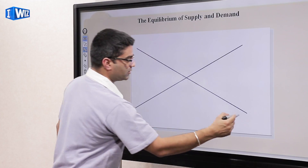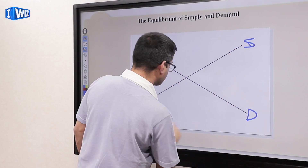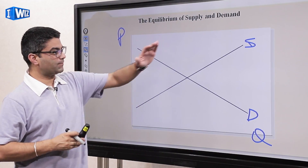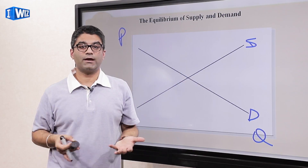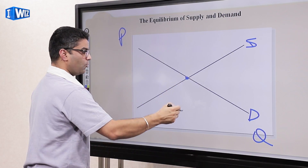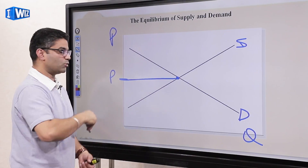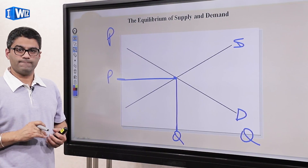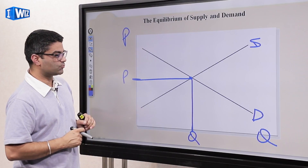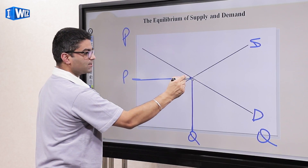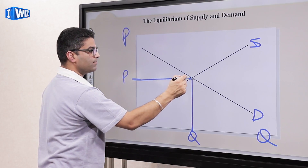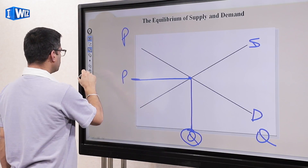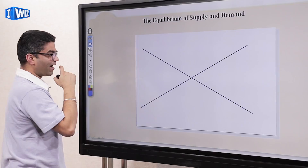Now let's look at it graphically. Here we have a graph — this is the demand curve, this is the supply curve. On the x-axis we represent quantity and on the vertical axis we represent price. If we are in equilibrium at this intersection point, that price — in our example, 40 — and that quantity — in our example, 160 — is the equilibrium price and quantity. At that price, we hit the supply curve at the same quantity as the demand curve, so Qs and Qd are identical at that quantity.